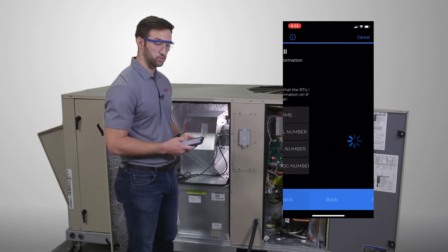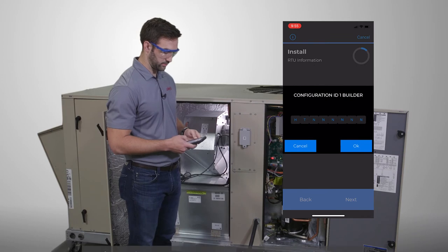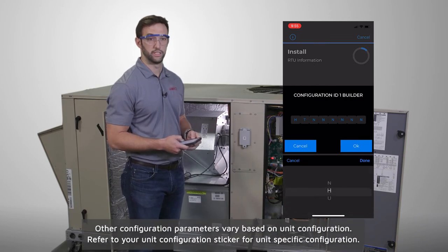And once you have that, for Humidotrile units, Configuration ID 1, Position 1 will be set to H.